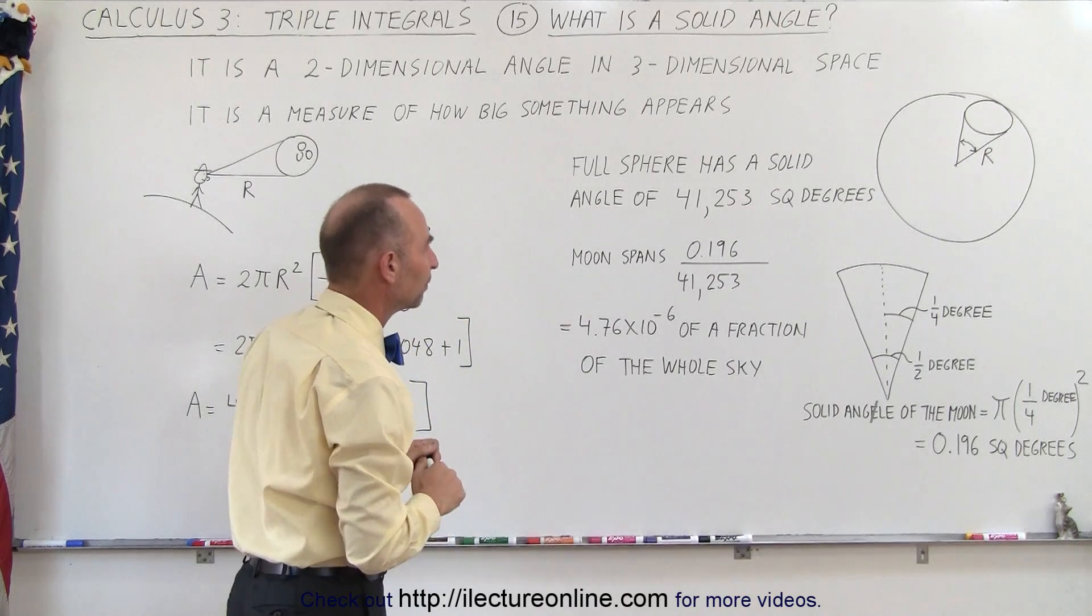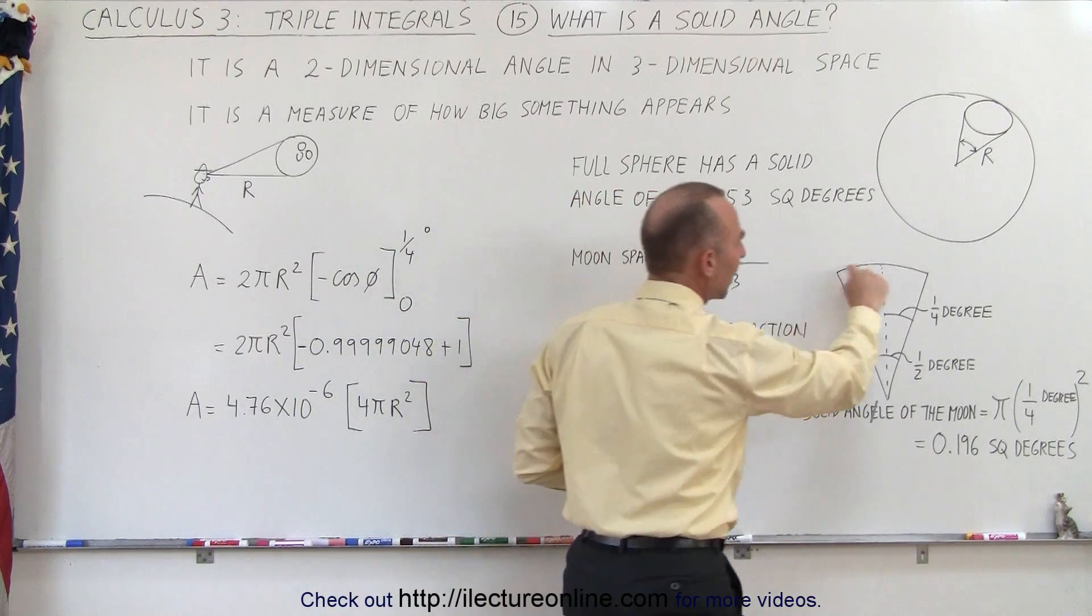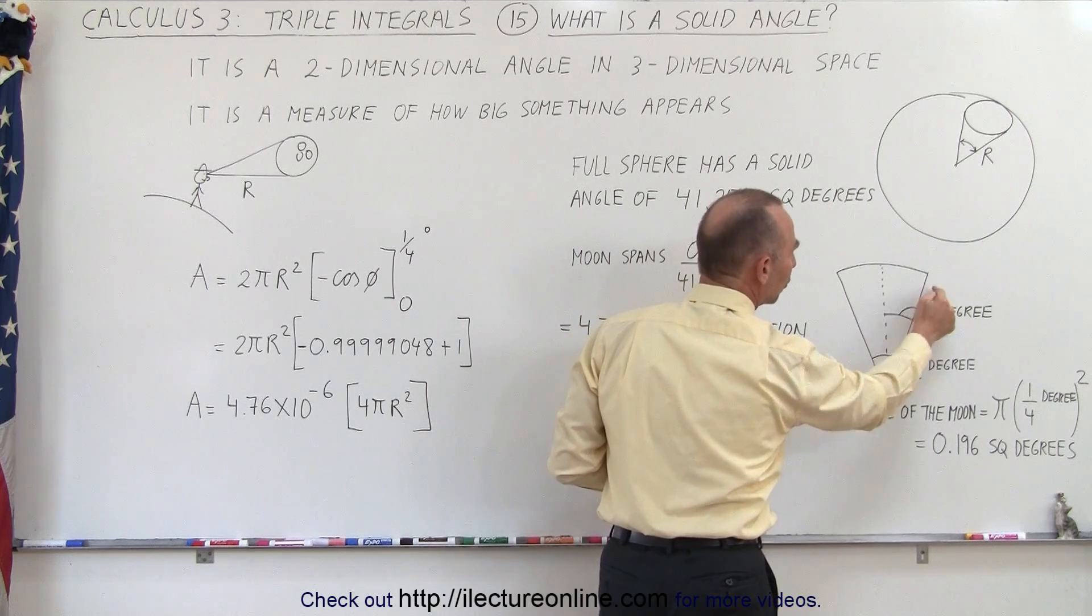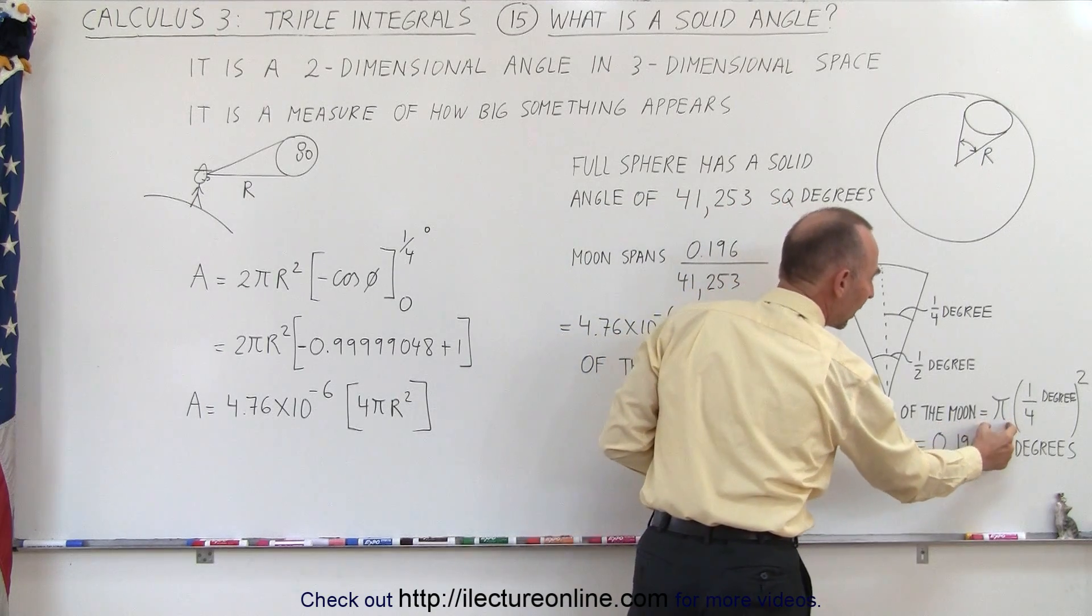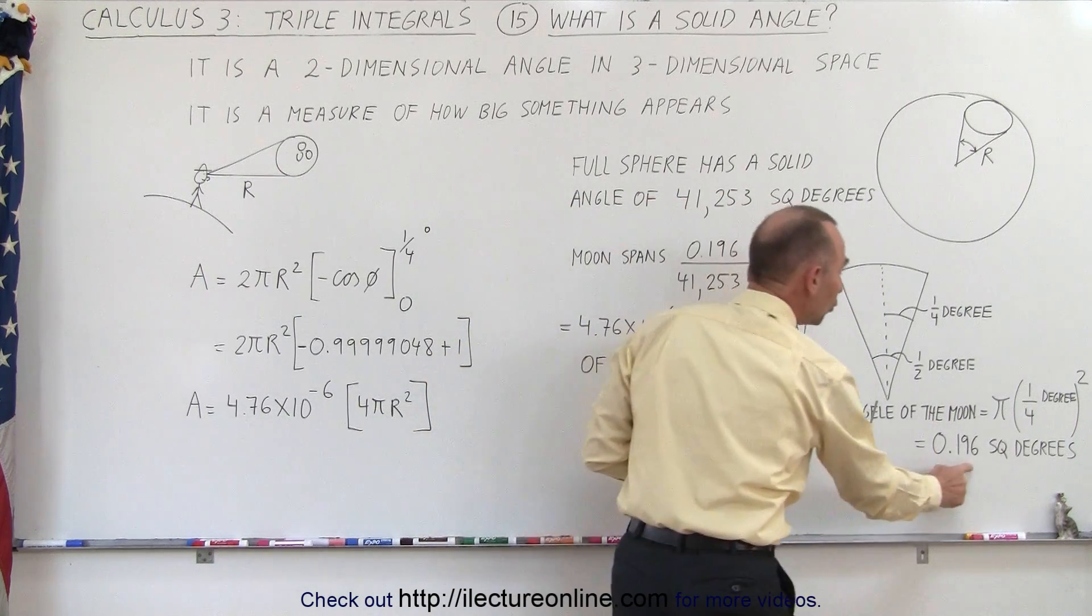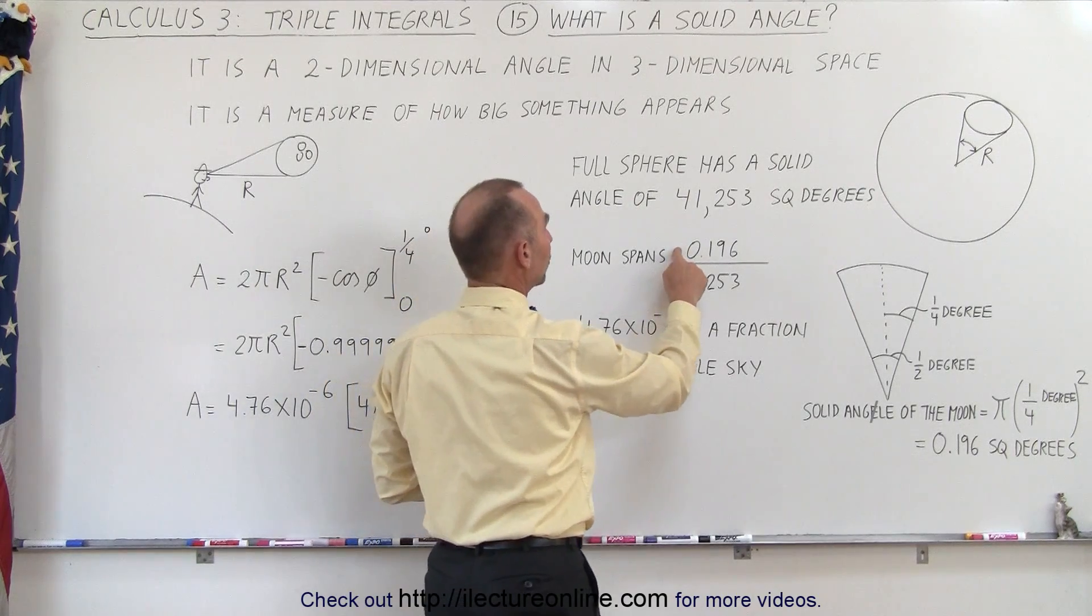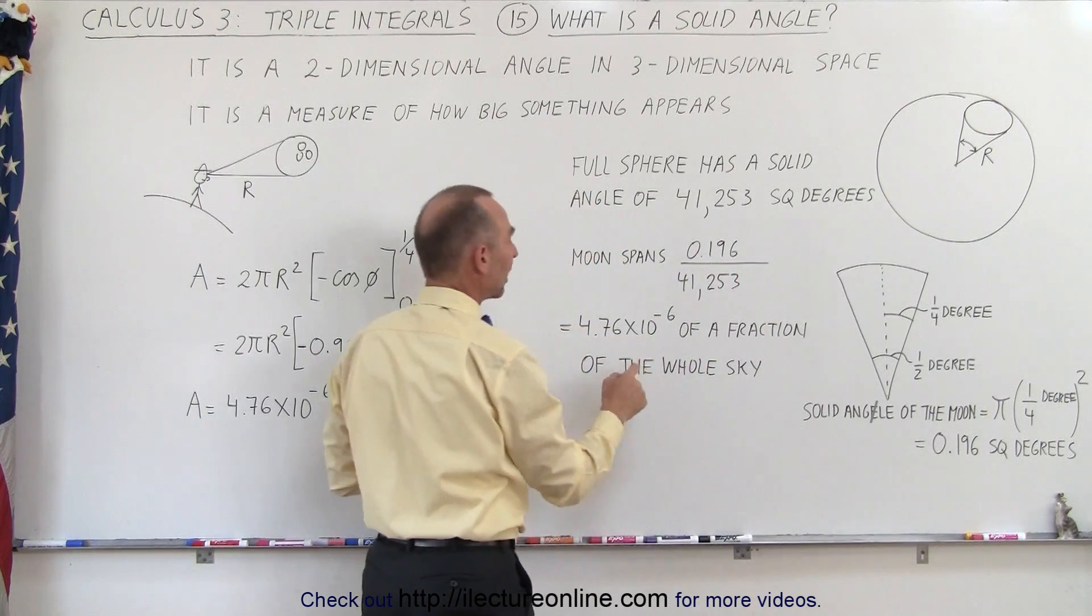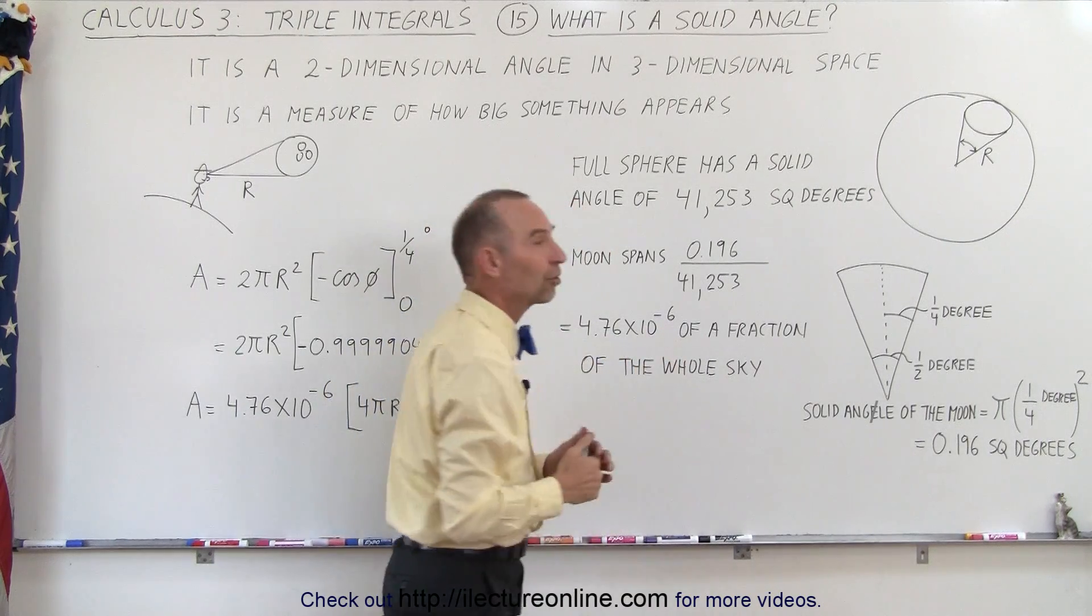And we'll show you later how that's calculated in a different video. Now when we look at the moon, we realize that the diameter of the moon spans an angle of a half a degree, which means that half the diameter of the moon is equal to a quarter degree. We can then say that the solid angle of the moon can be expressed as pi times one quarter degree squared. And if we calculate that, that is almost 0.2 square degrees. So if we divide that 0.2 square degrees of the moon, divided by the total size of the sky in square degrees, we can then see that the moon spans a fraction of 4.76 times 10 to the minus 6 of the entire sky.